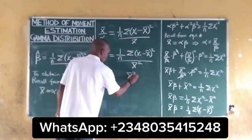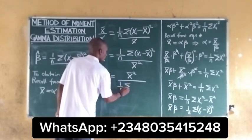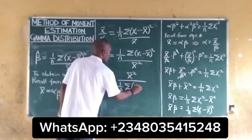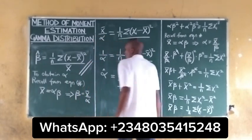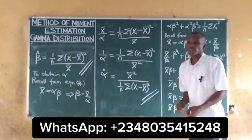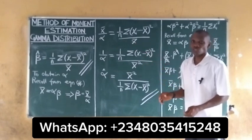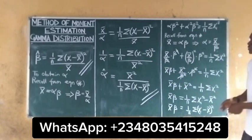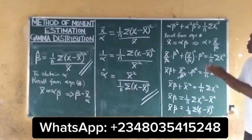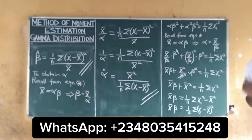So the estimate for alpha is x-bar² divided by (1/n)·summation of (x_i minus x-bar) squared. This is how the alpha and beta estimates for the gamma distribution using the method of moments can be obtained. These are the procedures needed to obtain the method of moments estimates for alpha and beta. For more on this topic, please subscribe to this channel.